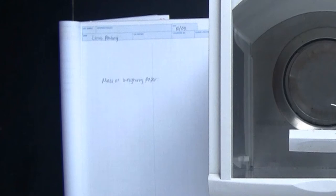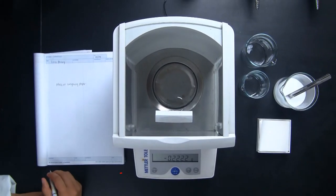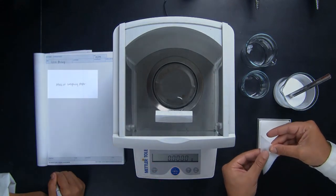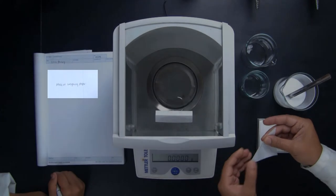Also, this time we're going to use the tare, or zero button, to zero out the mass of the weighing paper. So you will notice that in Wendy's laboratory notebook, there is no space for the mass of the weighing paper.